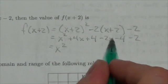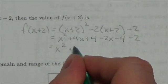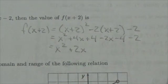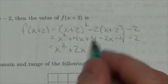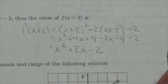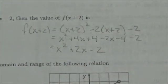So x squared, well there's a 4x here and a negative 2x here, so that's a total of 2x. And then I've got 4 minus 4, that's nice, that cancels. And then I've got this negative 2 left over. So x squared plus 2x minus 2.